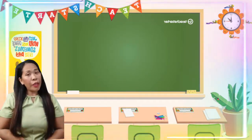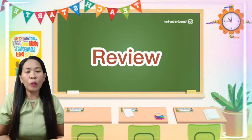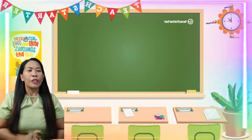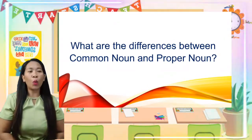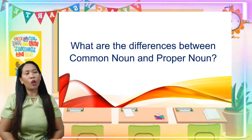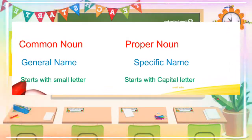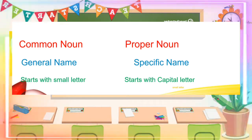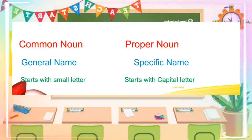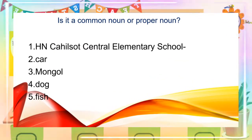Before going to have our new lesson, let us first have a review of what we learned yesterday. Yesterday we talked about the differences between the common noun and the proper noun. Remember that the common noun is for the general name. The proper noun is for the specific name and usually starts with a capital letter. Let us check first if you really got what we learned yesterday.